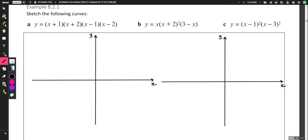Example 8.2.1 part A. Sketch the following curve. So it's fully factorized already, which is very useful to us. If it wasn't fully factorized, then that would be the first thing I would try to do. The reason it's useful when fully factorized is that we can then quickly see where it crosses the x-axis, also known as the roots of the function.